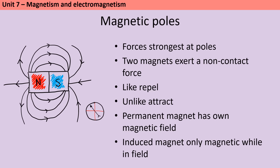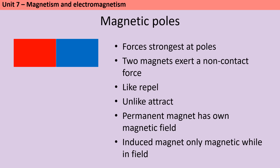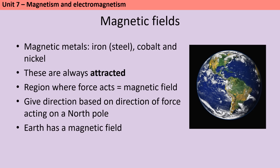The poles of a magnet are the places where the magnetic forces are strongest. When two magnets are brought close together they exert a non-contact force on each other. Two like poles repel each other and two unlike poles attract each other. A permanent magnet produces its own magnetic field. An induced magnet is a material that becomes a magnet when placed in a magnetic field; induced magnetism always causes a force of attraction, and when removed from the magnetic field an induced magnet loses most or all of its magnetism quickly. The region around a magnet where a force acts on another magnet or a magnetic material like iron, steel, cobalt and nickel is called the magnetic field.